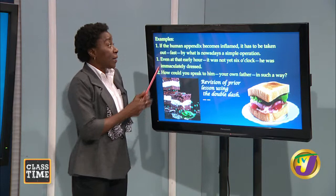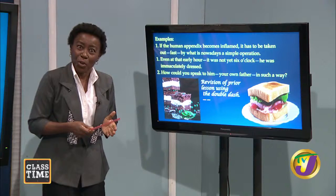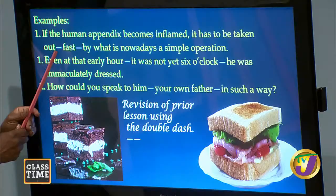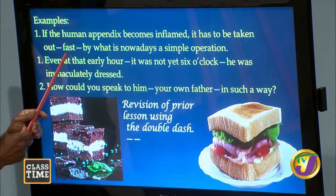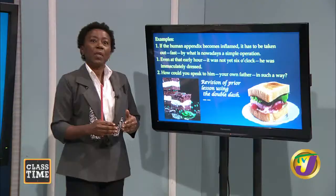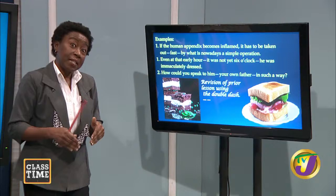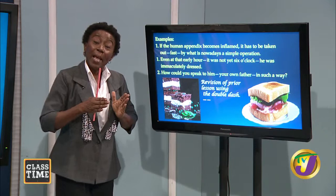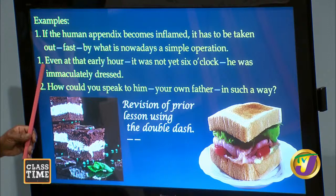The inserted word 'fast,' enclosed by two dashes, brings urgency to the thought. The two dashes mark off this extra thought that you place in the sentence. When you are using two dashes in a sentence, you open, put the thought in, close, and continue.